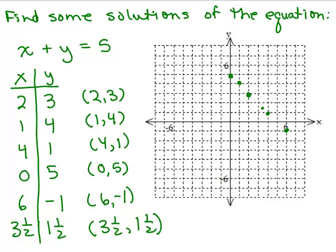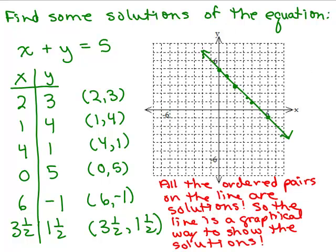So those are only 6 solutions of this. The way to represent all the solutions is to draw a line through all the points. So keep in mind, all of the ordered pairs on this line are solutions to x plus y equals 5. So the line is a graphical way to show all the solutions to x plus y equals 5.